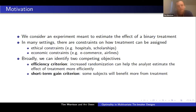Broadly speaking, we can identify two competing objectives at play. On the one hand, there's an efficiency criterion: increasing randomization can help estimate the treatment effect more efficiently, which is usually our primary goal in causal inference. On the other hand, there's something we might call the short-term gain criterion, which is that some subjects will benefit more from treatment. In this work, we're motivated by the scenario in which both criteria are very much of interest.